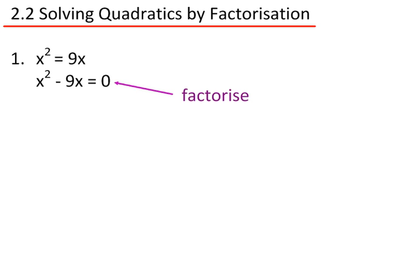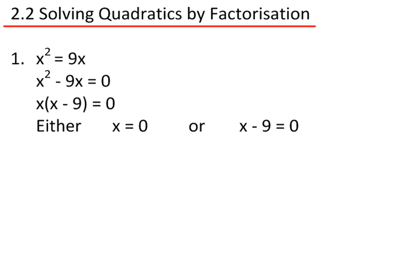I can take x out as a factor, so x times x minus 9 in brackets equals 0. Either x must be equal to 0, or x minus 9 must be equal to 0. So x equals 0, or x equals 9.